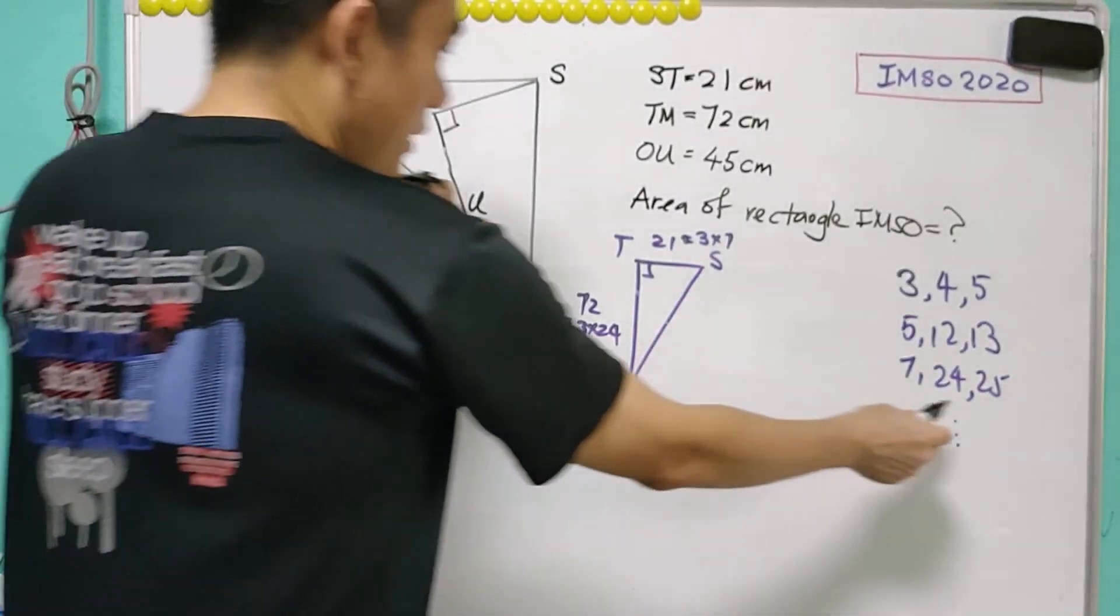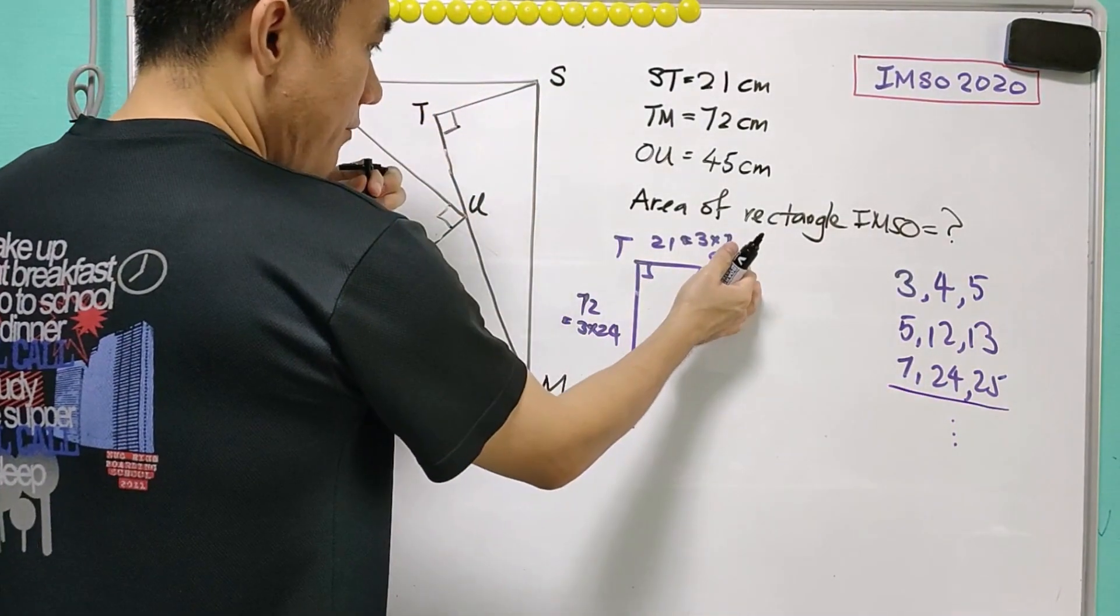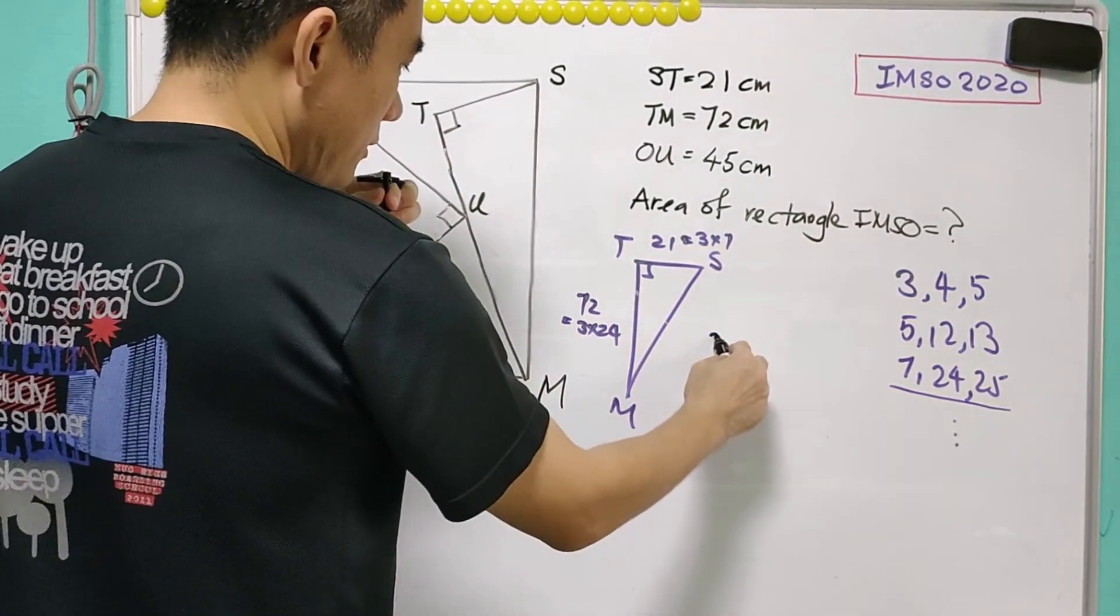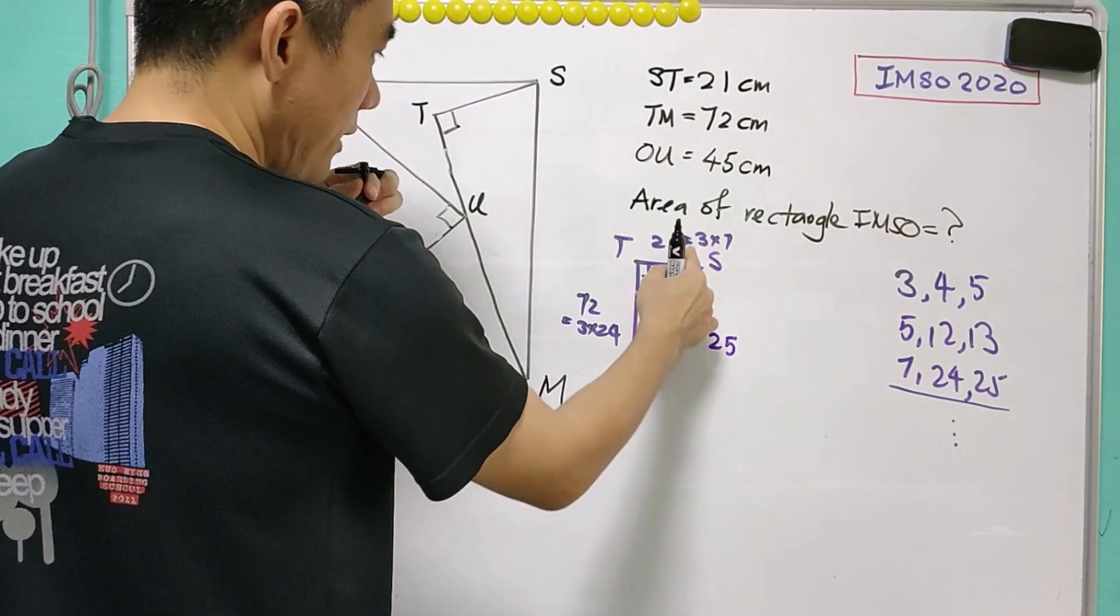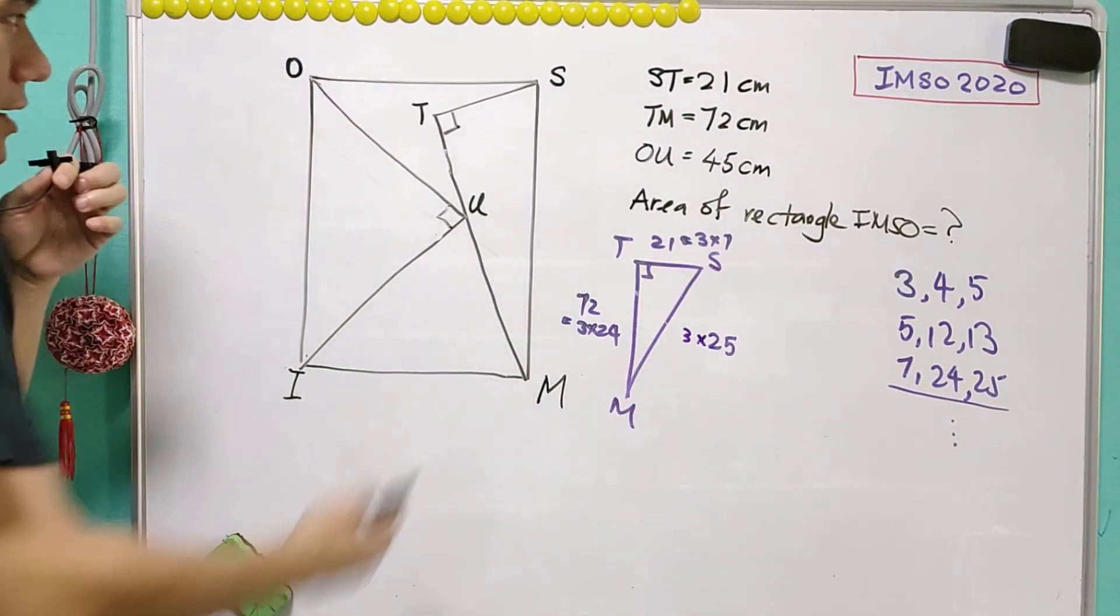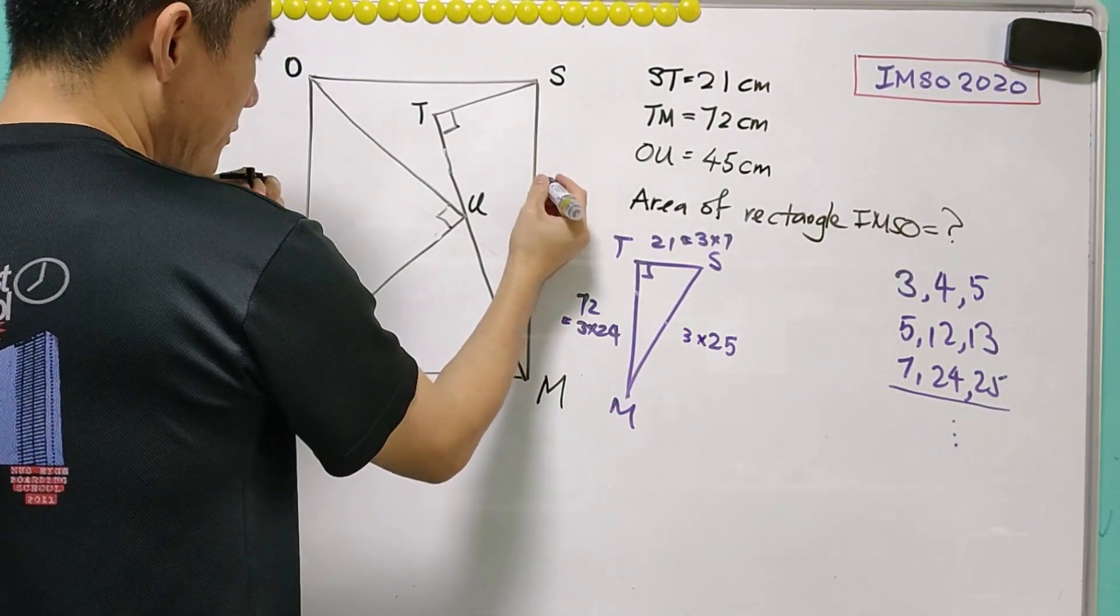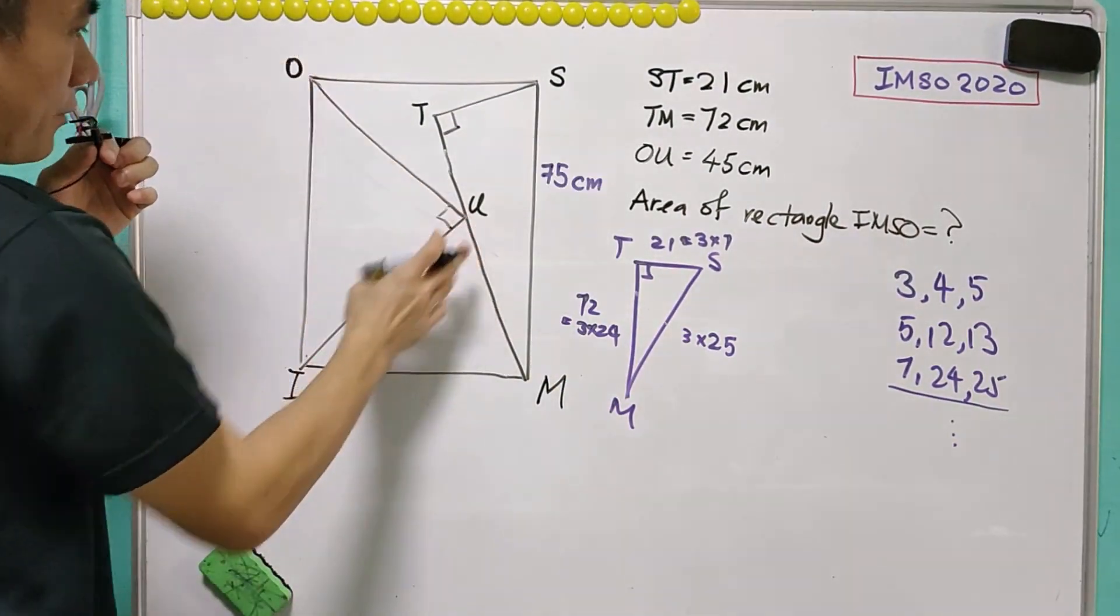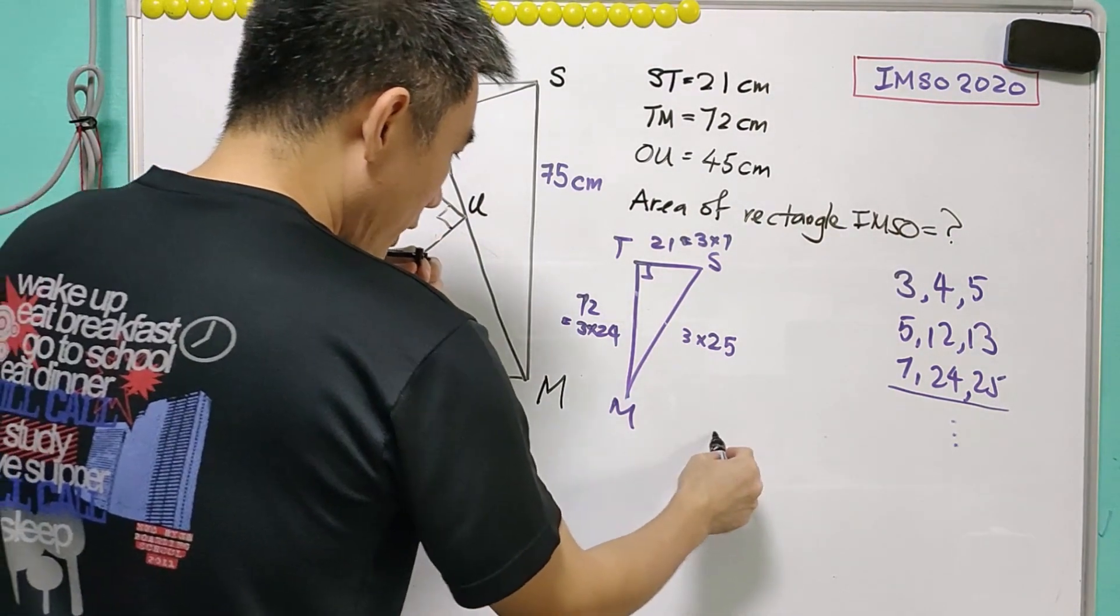Therefore that is 25, but that is a multiple of 3, so times 3. So it means that SM will be equal to 75 cm.